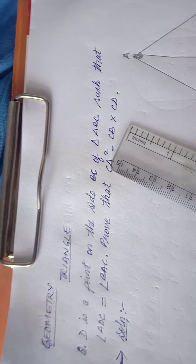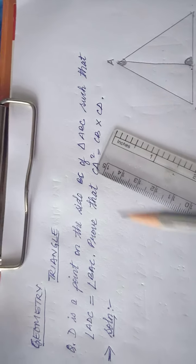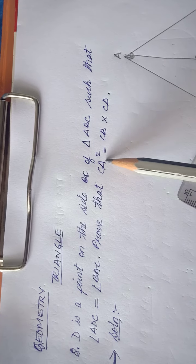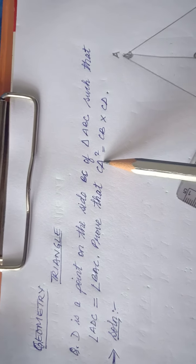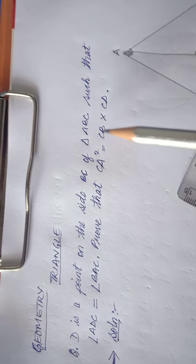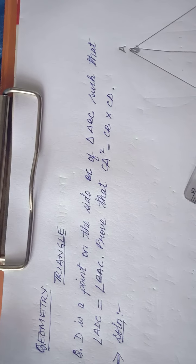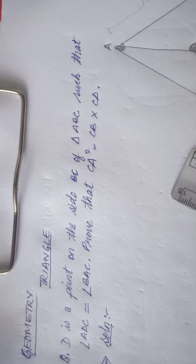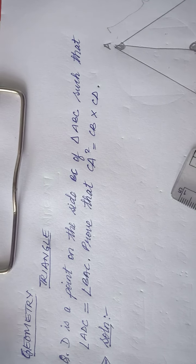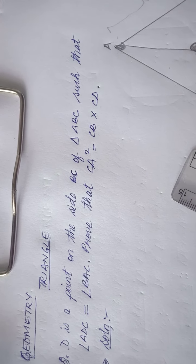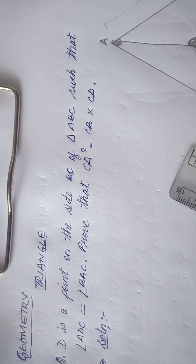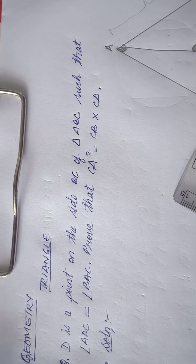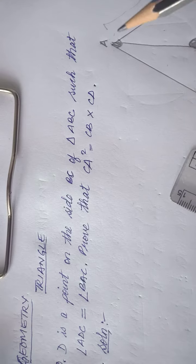Since angle BAC equals angle ADC, we now have to prove that CA² is equal to CB multiplied by CD. This is the important part: CA squared equals CB into CD. If we multiply CB and CD, it must equal AC squared.